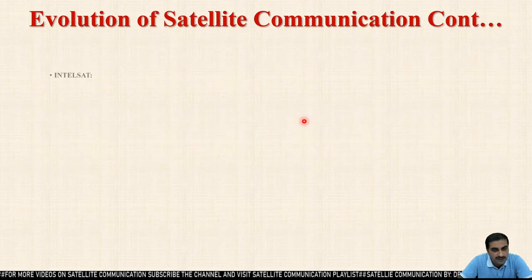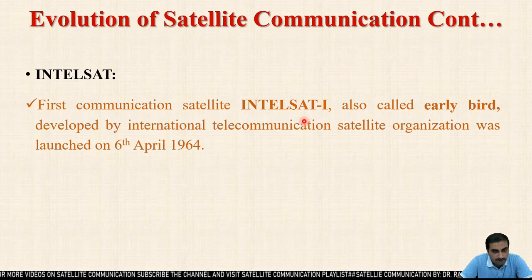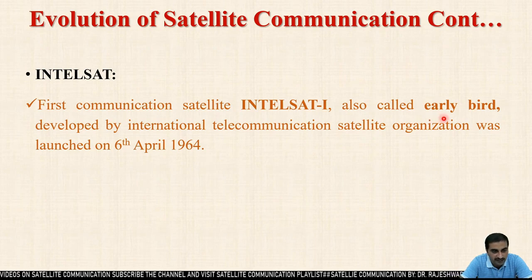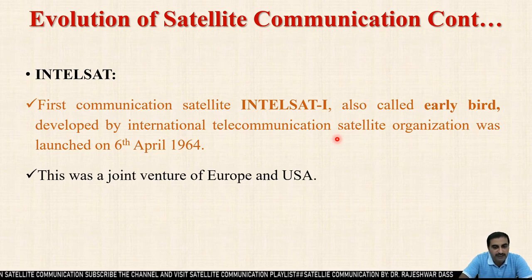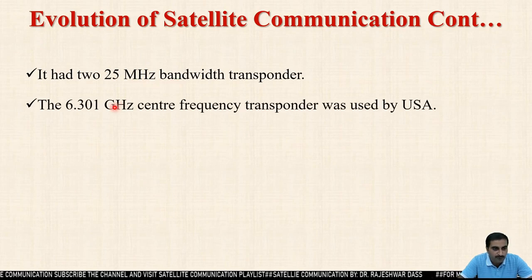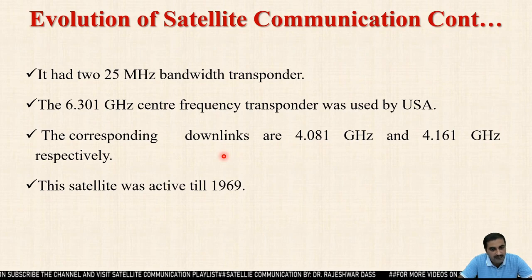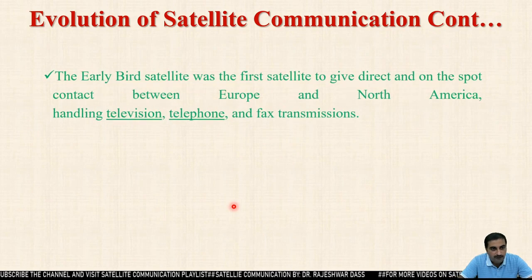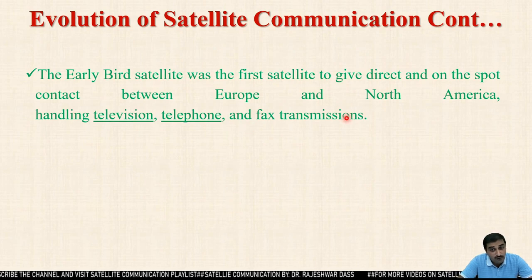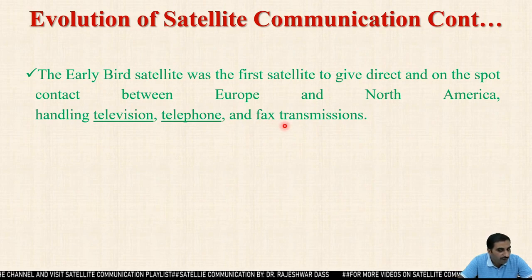Simultaneously with the Syncom-3 series, the Intelsat series also came into the picture. The first Intelsat was launched on 6th April 1964, known as the 'Early Bird' satellite, developed by the International Telecommunication Satellite Organization — a joint venture of Europe and the USA. It had two 25 MHz bandwidth transponders with central frequencies of 6.30 GHz for uplink, and corresponding downlinks of 4.081 GHz and 4.161 GHz. The Early Bird was the first satellite to provide direct contact between Europe and North America, handling television, telephone, and fax transmissions. This satellite was active until 1969.